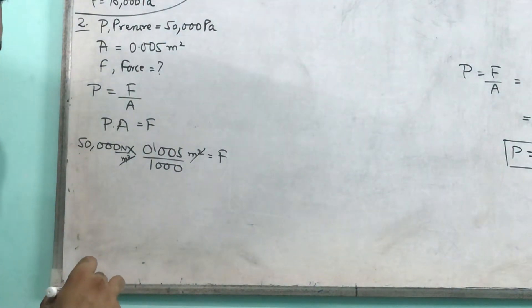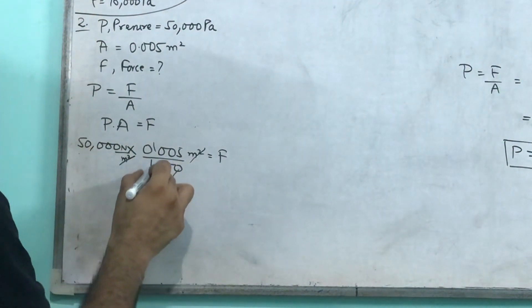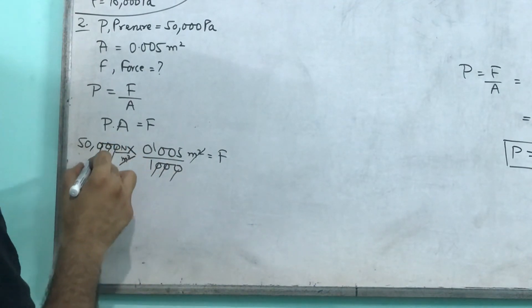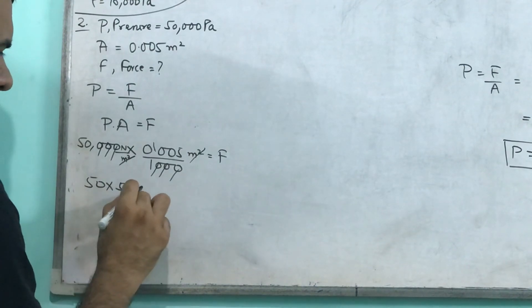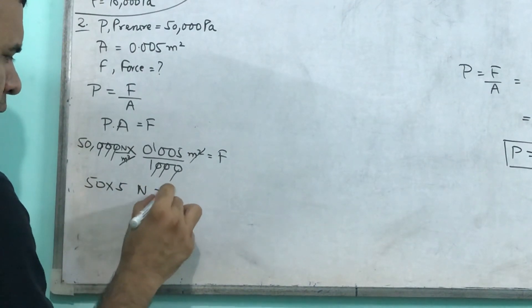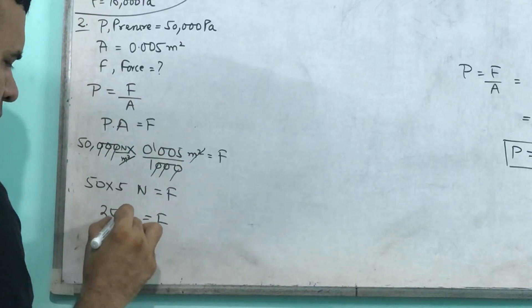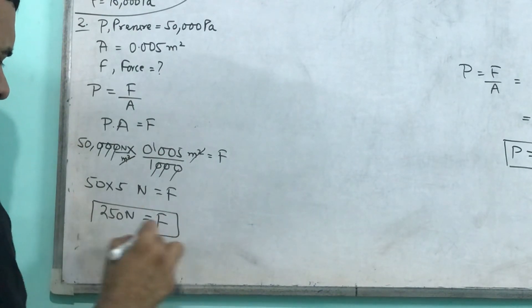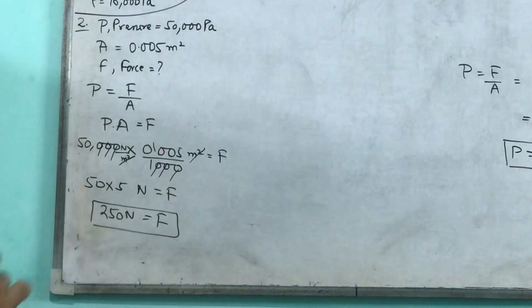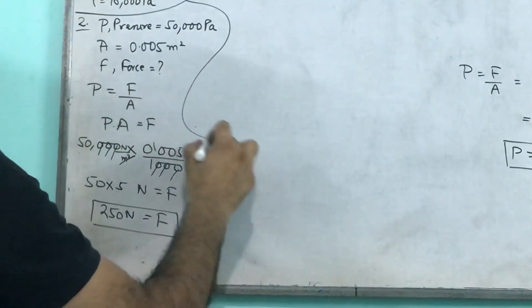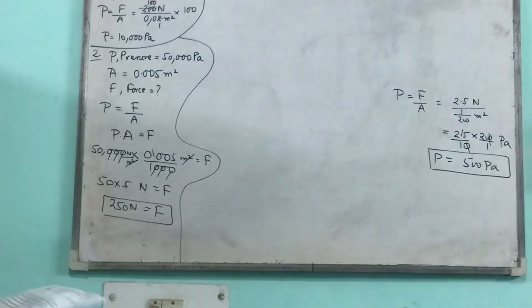You know this is simple mathematical skill. Three zeros cancel with three zeros. 50 into 5, and the unit of force is newton. So the force answer will be 250 newton. This will be our answer. So class, pay attention, this will be our answer.